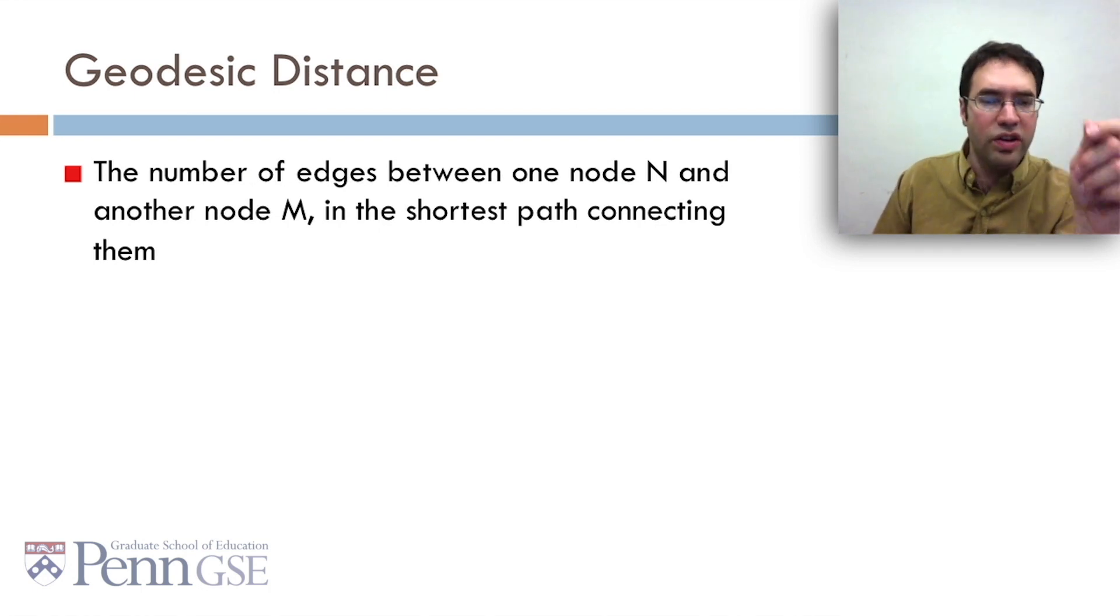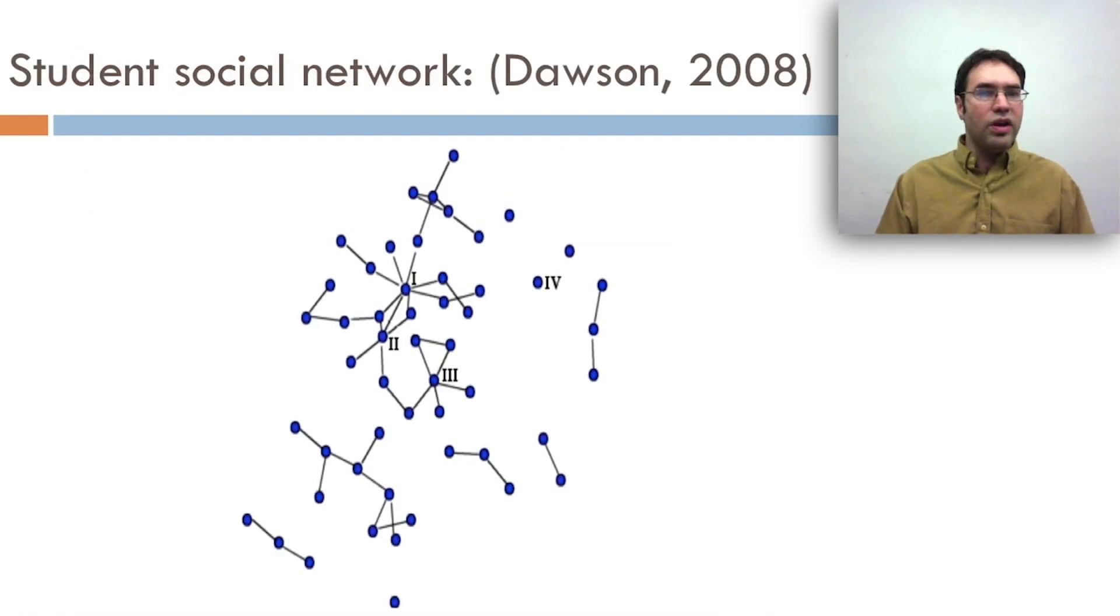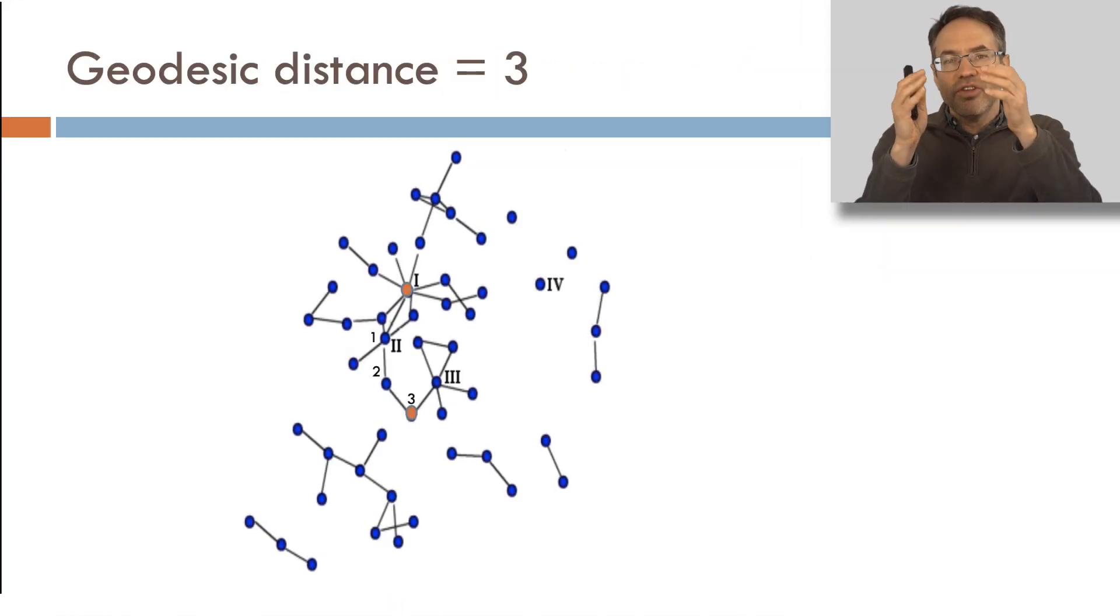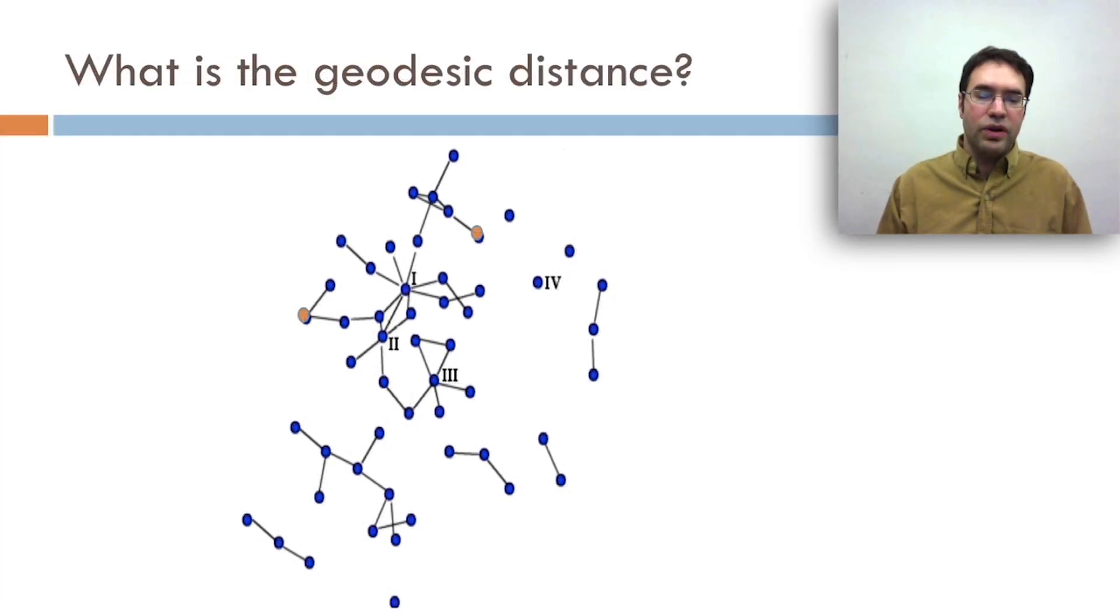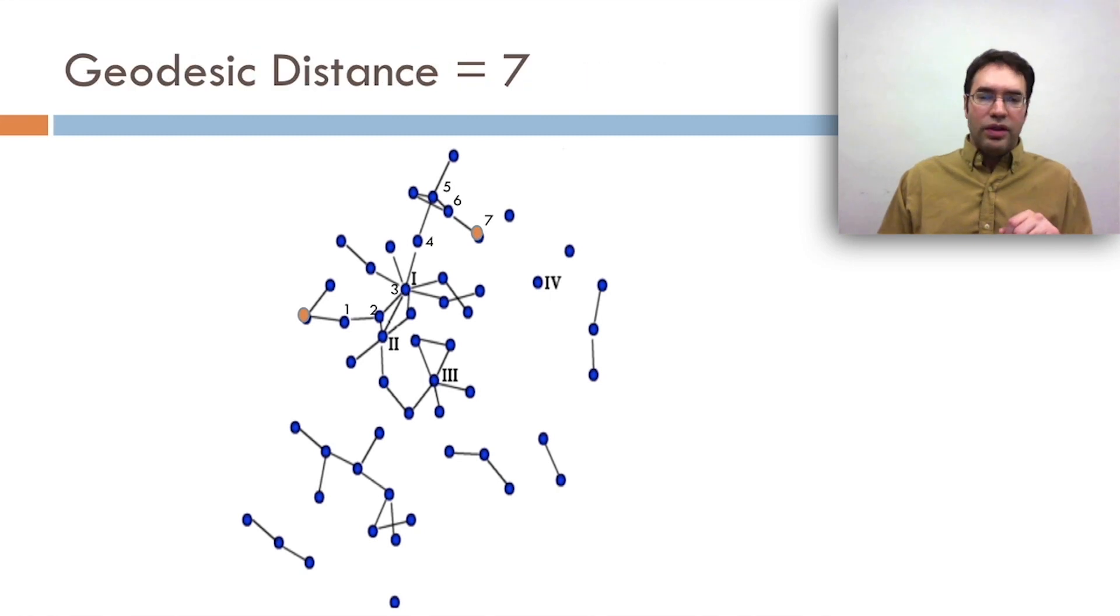Geodesic distance. Geodesic distance is the number of edges between one node and another node, M, in the shortest path connecting them. If we look at Student Social Network, and this is work by Shane Dawson looking at an online class. So, what's the geodesic distance here? Well, you can see from the orange point to the orange point, one, two, three. Done. Between these ones, try to do it yourself really quickly, pause the video.